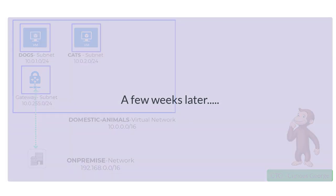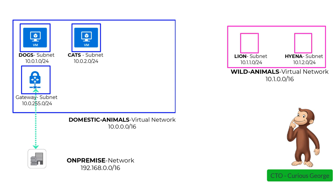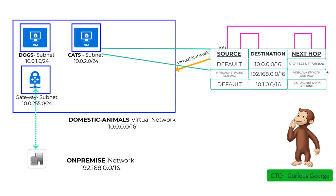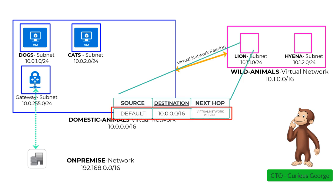A few weeks passed by and Modern Zoo acquired a new virtual network called Wild Animals Virtual Network with an address range of 10.1.0.0/16, which consisted of two subnets: a lion subnet and a hyena subnet. This network was connected to the Domestic Animals Virtual Network using virtual network peering. Once again, Curious George wondered how a lion subnet can talk to a dog subnet. If we go back and look at the effective routes after the virtual network peering was set up, we now see a route with source default, destination 10.1.0.0/16, and next hop as virtual network peering. Similarly, you would also see a corresponding route on the Wild Animals side with destination as the Domestic Animals Virtual Network address range and next hop as virtual network peering.